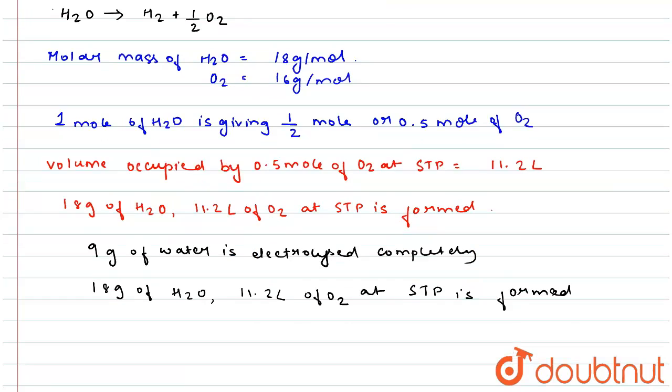...from 9 gram of water, 5.6 liter of O2 at STP will be formed. So by matching with the options, option C is the correct answer.